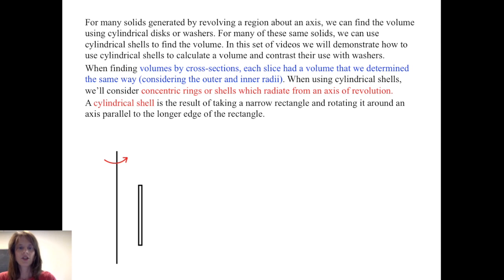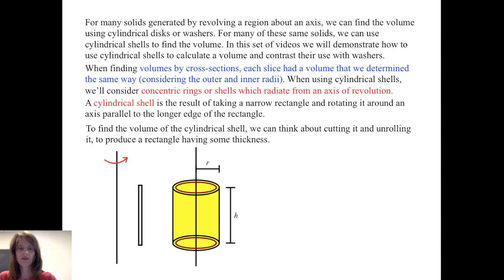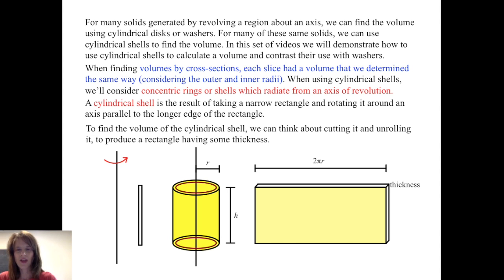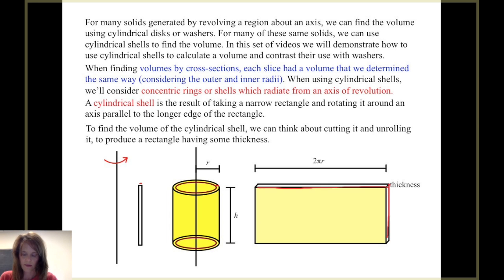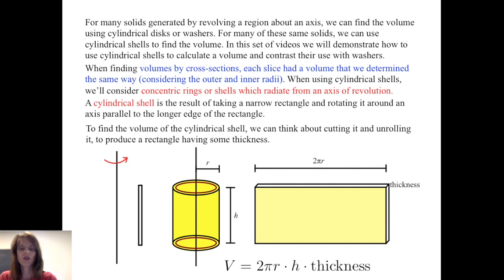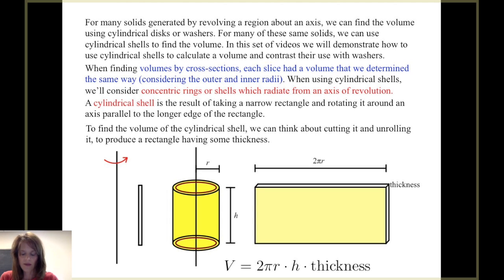What is a cylindrical shell? A cylindrical shell is the result of taking a narrow rectangle and rotating it around an axis parallel to the longer edge of the rectangle. So here I've got a rectangle where the axis of revolution is parallel to the long edge. When I rotate it about the axis, I get a shell that's got some thickness to it. I can think about cutting it and unrolling it to produce a rectangle that has some thickness — in other words, a very thin rectangular prism. The volume of that rectangular prism comes from the circumference of the circle, 2πr, times the height of the cylindrical shell, times the thickness.